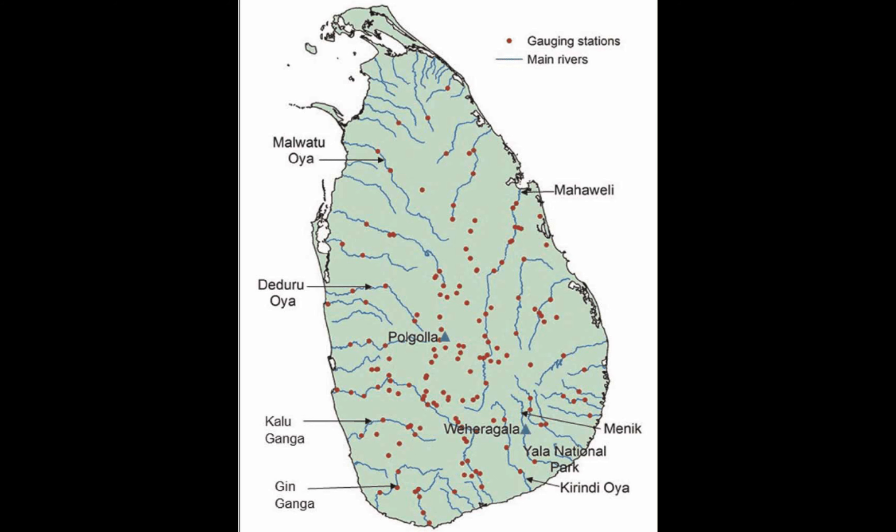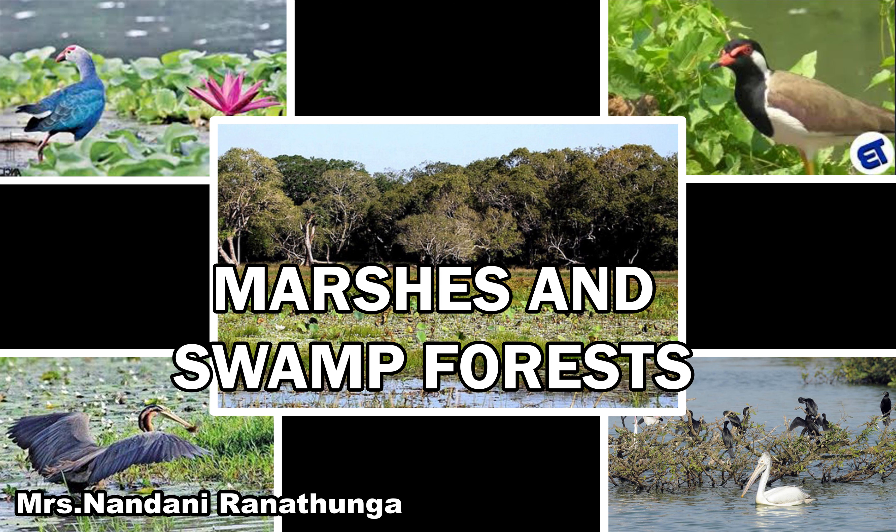Let's look at rivers and streams. There are 103 rivers in Sri Lanka. They begin from the central hills and they are perennial — that is, they do not dry up. Small rivers in the dry zone are seasonal. Hardly any vegetation is found in running water.